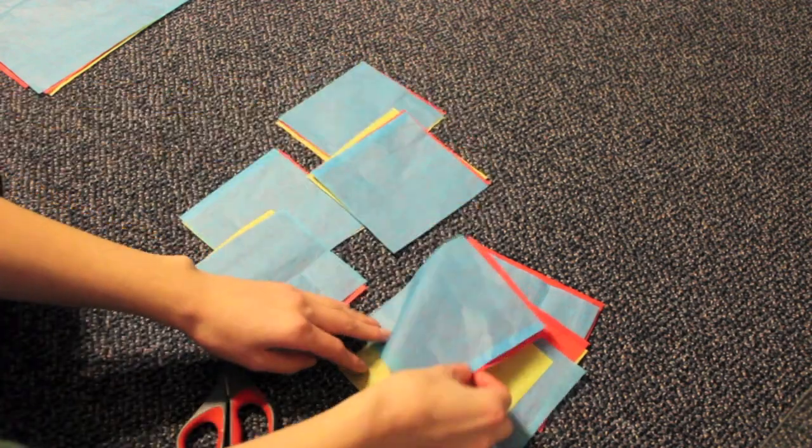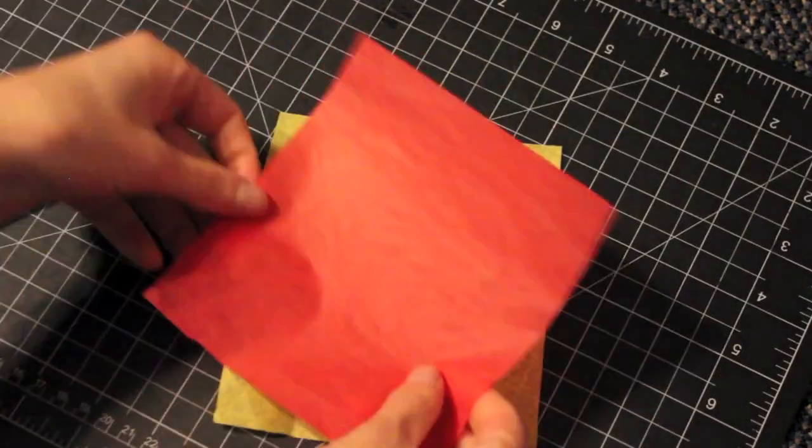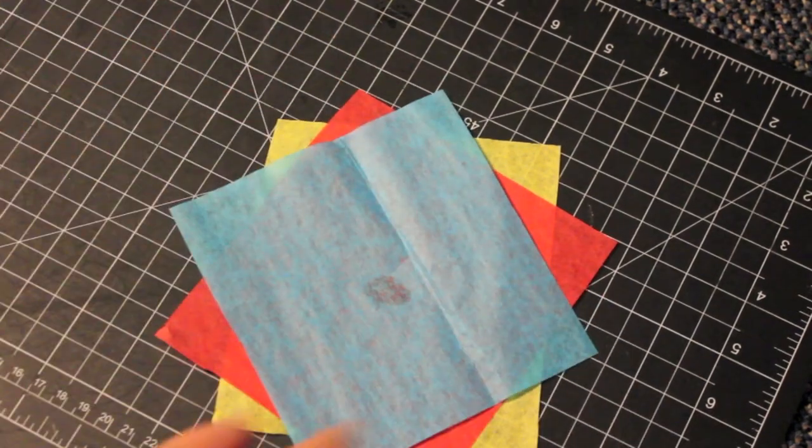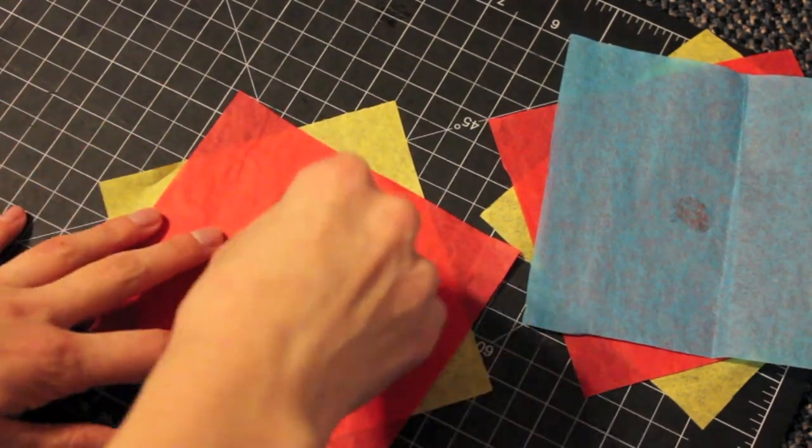After you finish cutting your 16 sets, you want to grab a glue stick and glue the tissue paper right in the middle. You want to angle each tissue paper so that the corners poke out. You don't want to use a hot glue gun for this because when it dries, it gets too bulky.